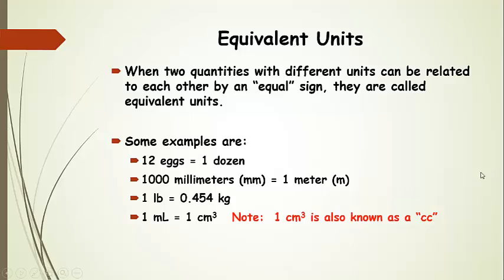Some examples: 12 eggs is equal to one dozen. That's something from our everyday lives that we automatically use — those equivalent units — and we don't even think about it. But this is an example of equivalent units. Here we have eggs as the unit, and here we have a dozen.